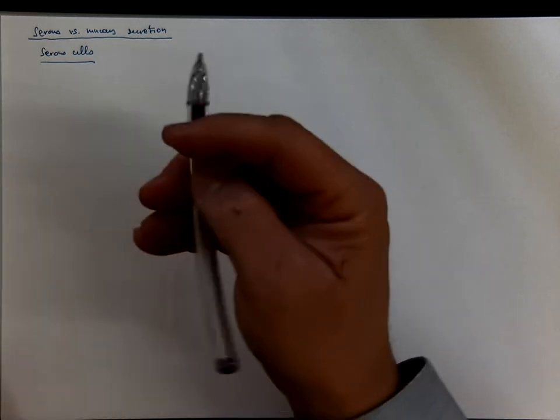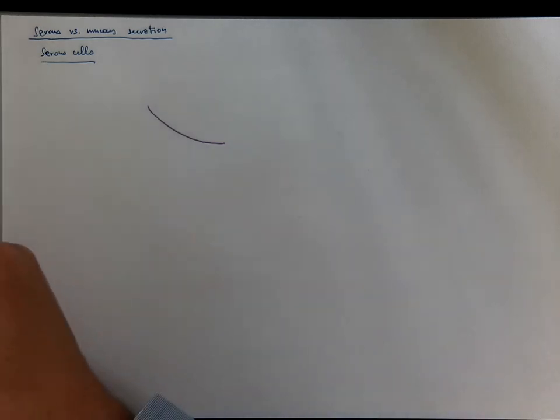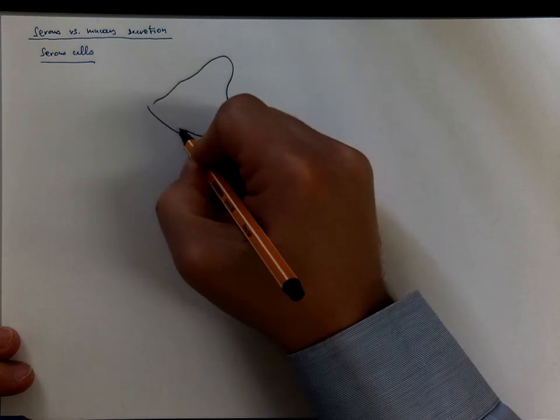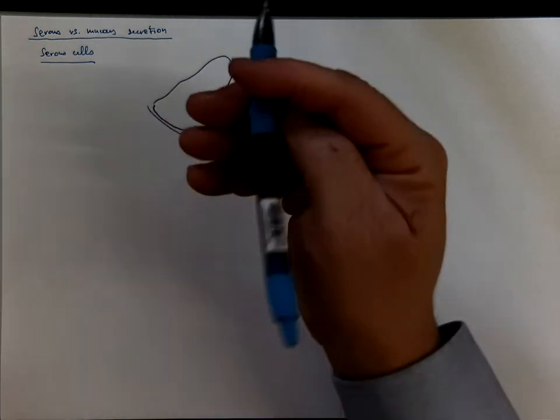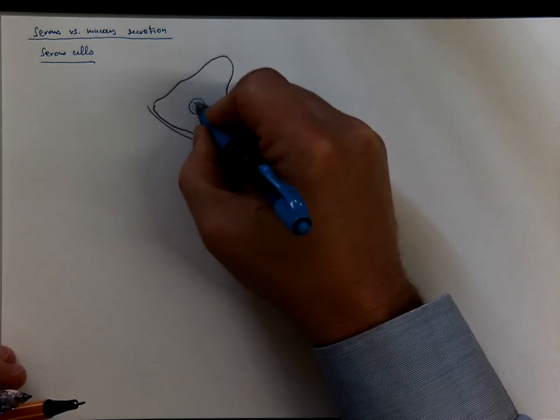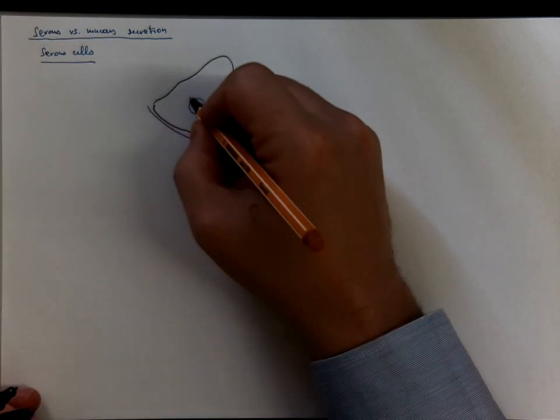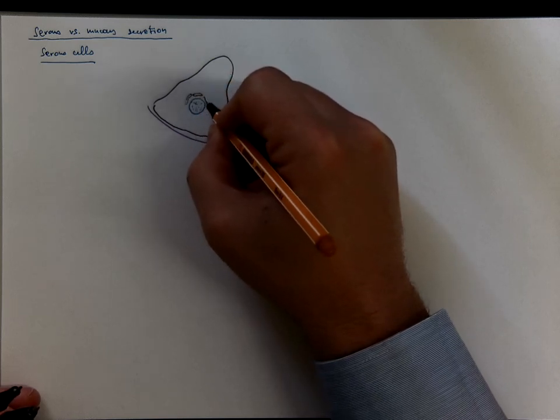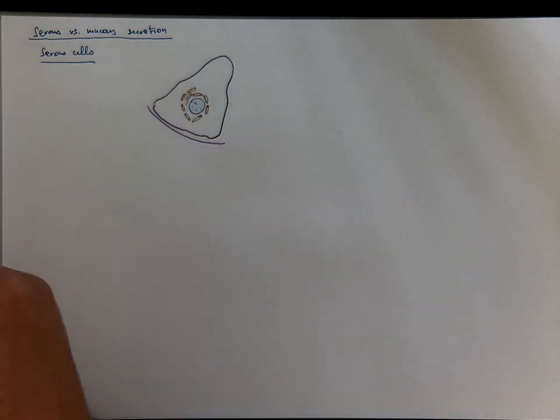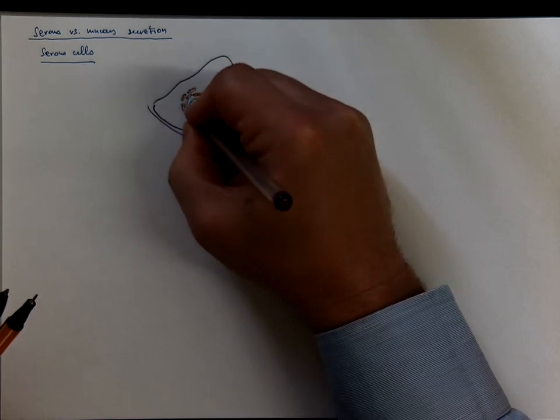Serous cells are sitting on a basal membrane. They have a shape of a pyramid, approximately. The nucleus is usually round-shaped. It's made mainly of euchromatin, therefore it's light. There is well-developed granular endoplasmic reticulum because these cells are specialized for producing proteins.